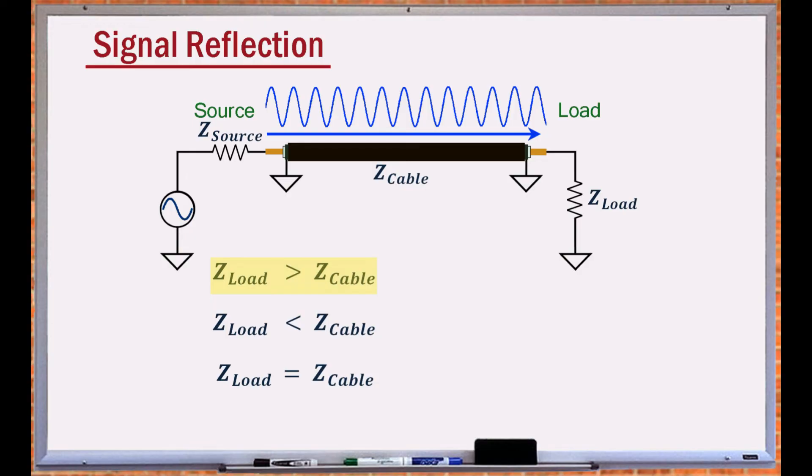A higher load impedance reflects a part of the signal back to the source. There is no reflection when the load impedance is smaller than the impedance of the cable. However, smaller loads cause signal loss.